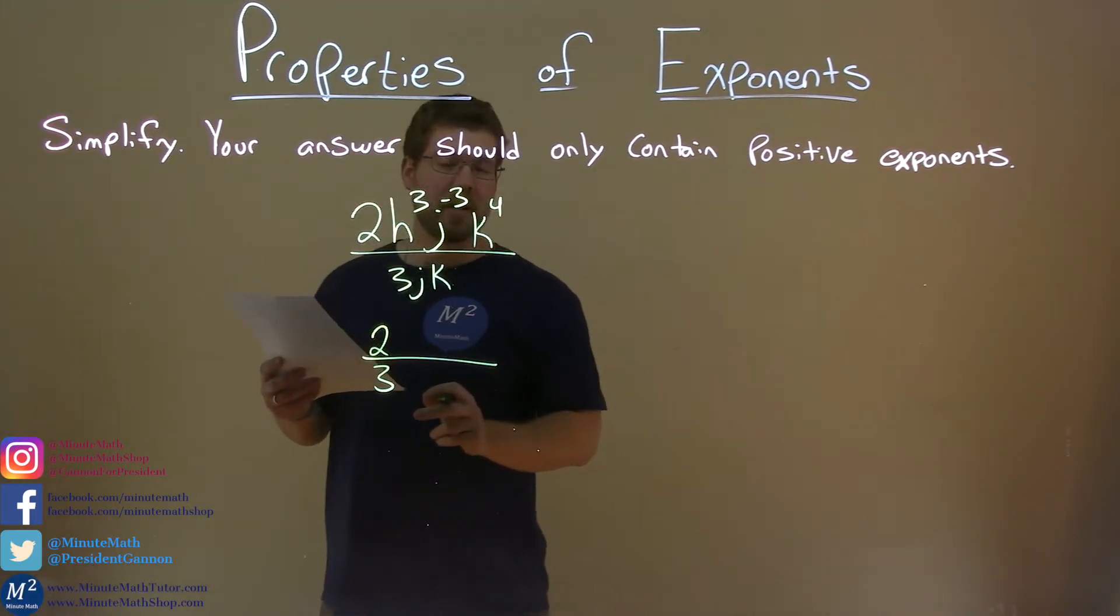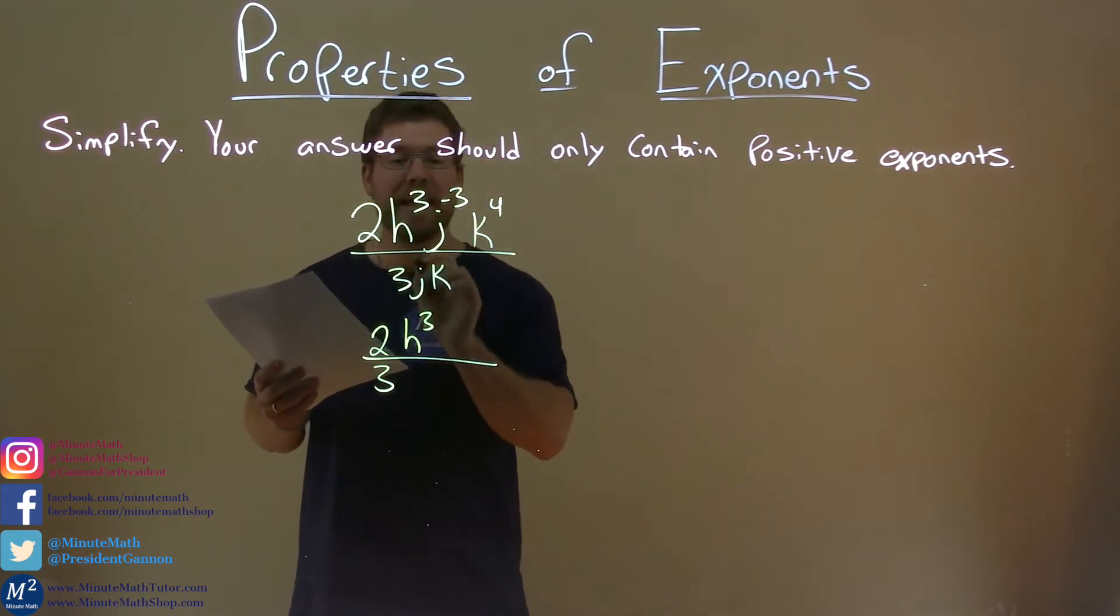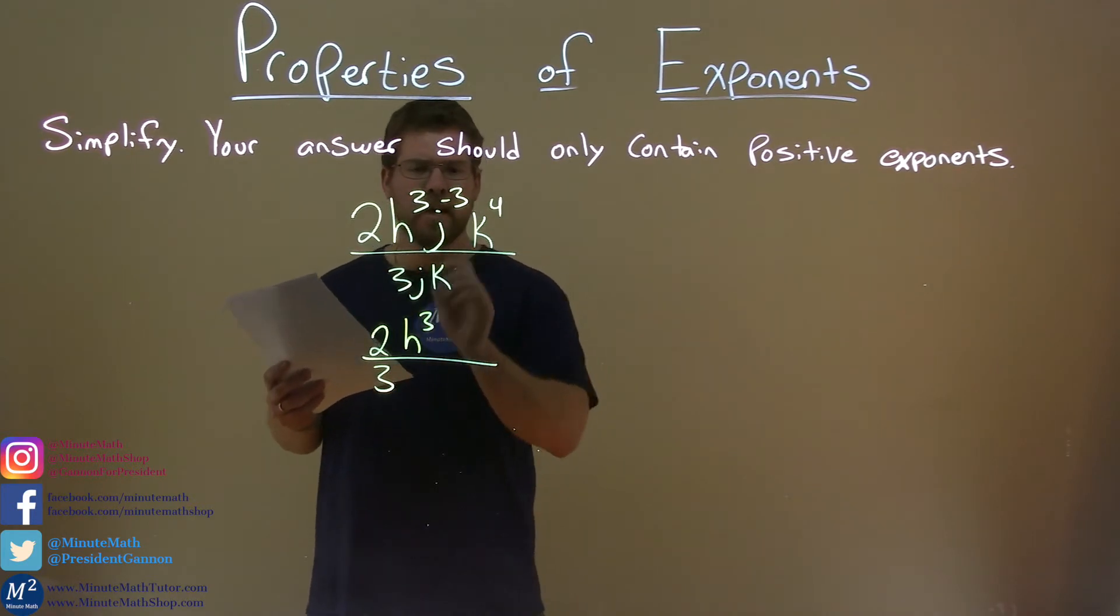h to the third - anything in the denominator to simplify with? Nothing really cancels out. We keep h to the third in the numerator. All right, got that done.